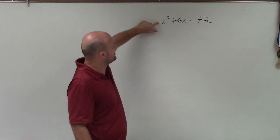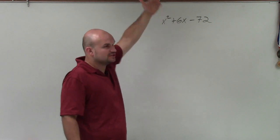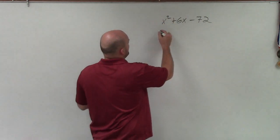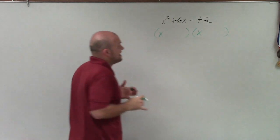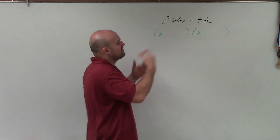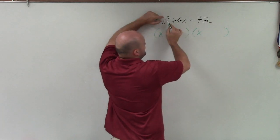whenever we're factoring trinomials and we just have a quadratic term x squared, where we say the coefficient is 1, then we automatically know that when we're going to write this as a product of two factors, the first two terms of my factors are going to be x. Because when I apply FOIL or distributive property, I'm going to multiply x times x. That's going to give me x squared.